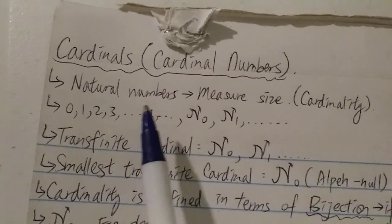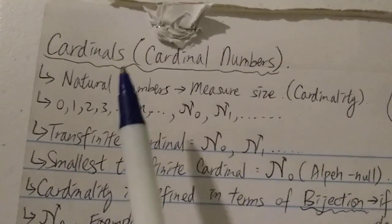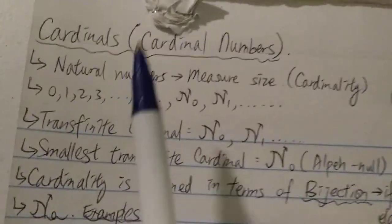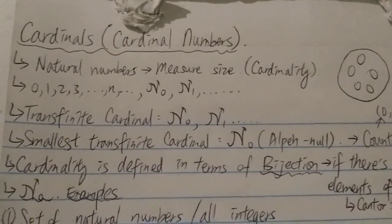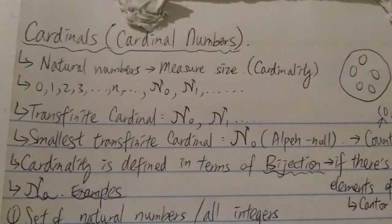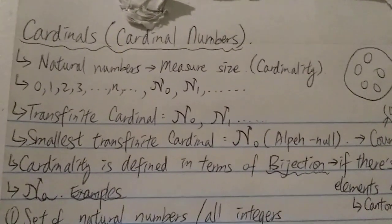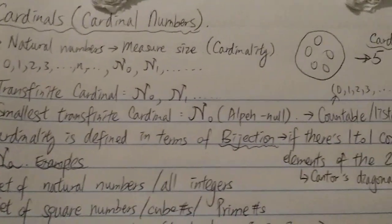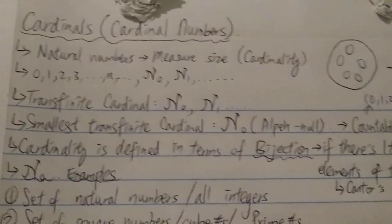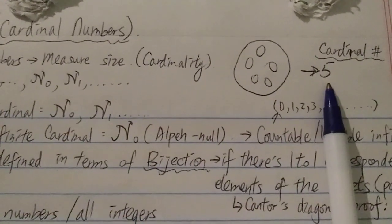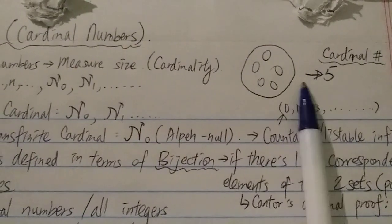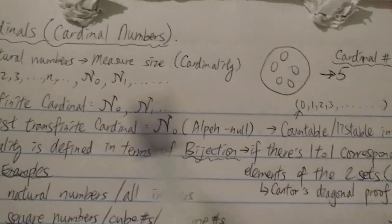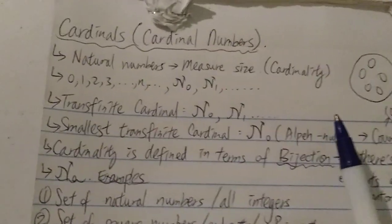Cardinals would be 0, 1, 2, 3, 4, 5, and so on. Ordinals would be 1st, 2nd, 3rd, 4th, 5th, etc. That's the main difference between cardinals and ordinals. But in this video we're not going to talk about ordinals — it's actually a very simple idea.